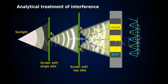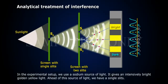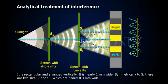Analytical treatment of interference. In the experimental setup, we use a sodium source of light. It gives an intensively bright golden yellow light. Ahead of this source of light, we have a single slit. It is rectangular and arranged vertically. It is nearly 1 mm wide.